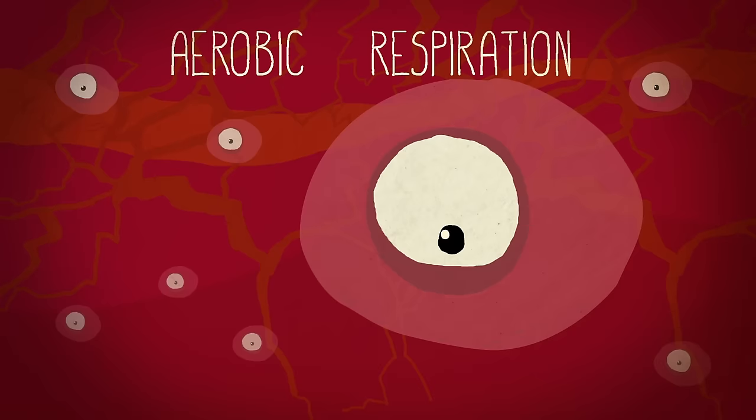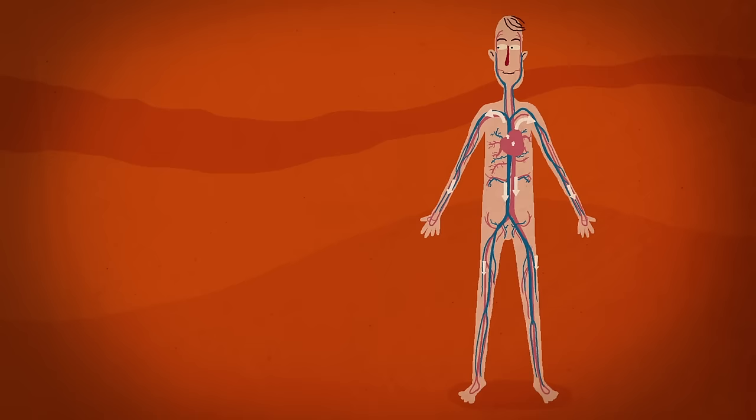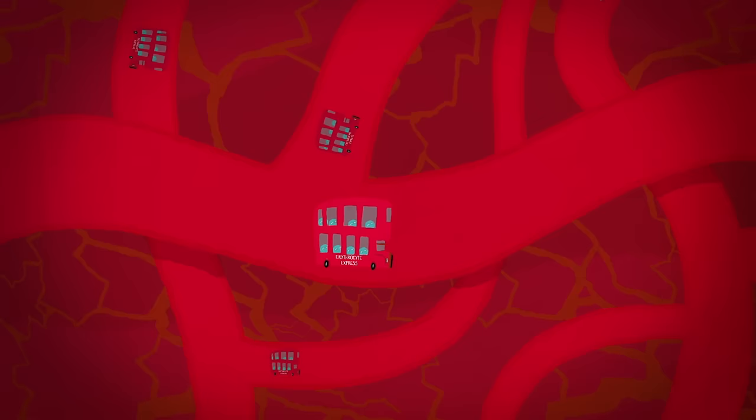Most of our cells need oxygen because it's one of the key ingredients of aerobic respiration. That's the process that produces a molecule called ATP, which our cells use to power their many incredible functions.